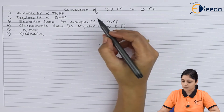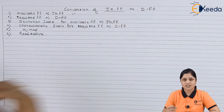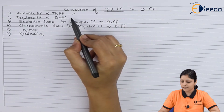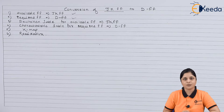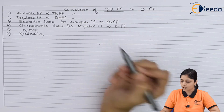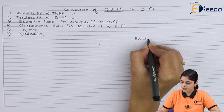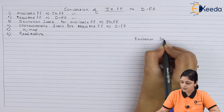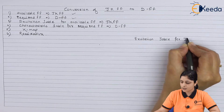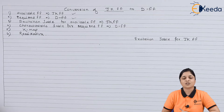So the first step is we have identified our available flip-flop, which is the JK flip-flop. After that we identified the required flip-flop, the D flip-flop. Now we have to draw the excitation table for the JK flip-flop. You have to memorize and draw the excitation table.